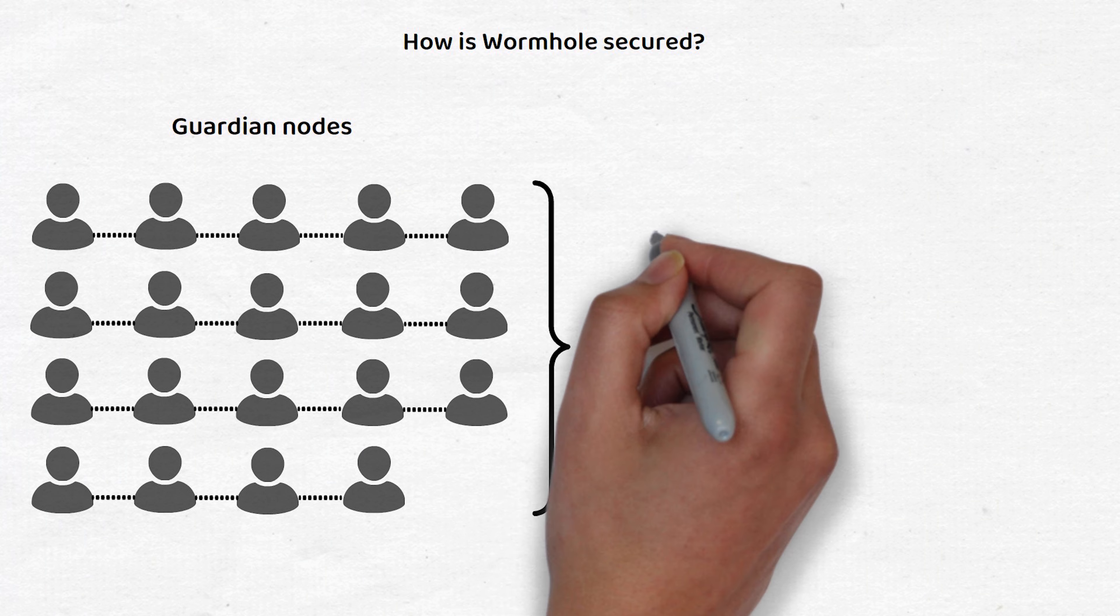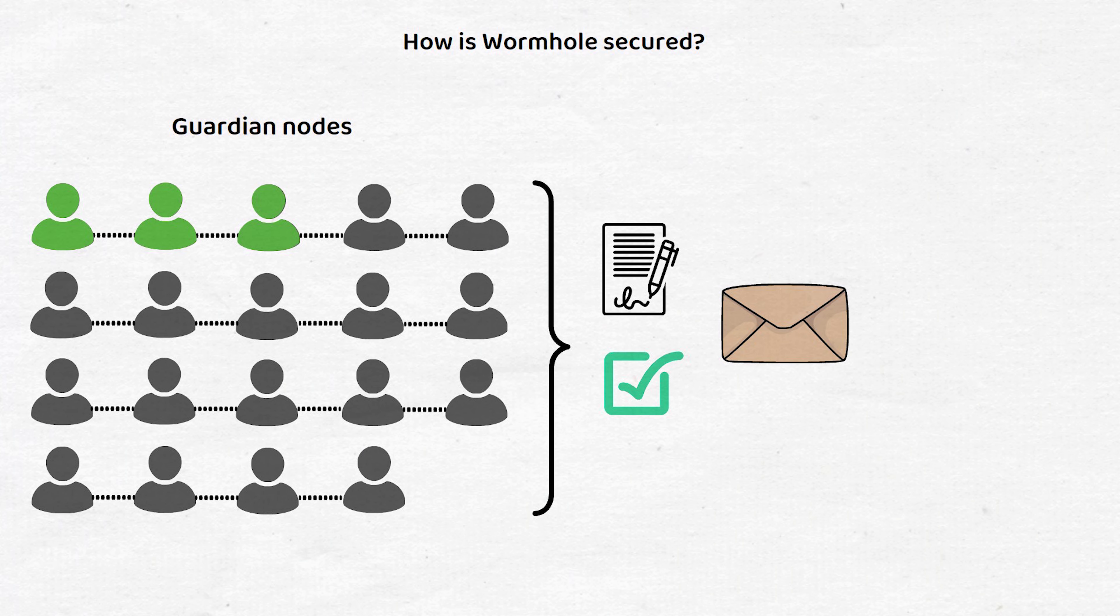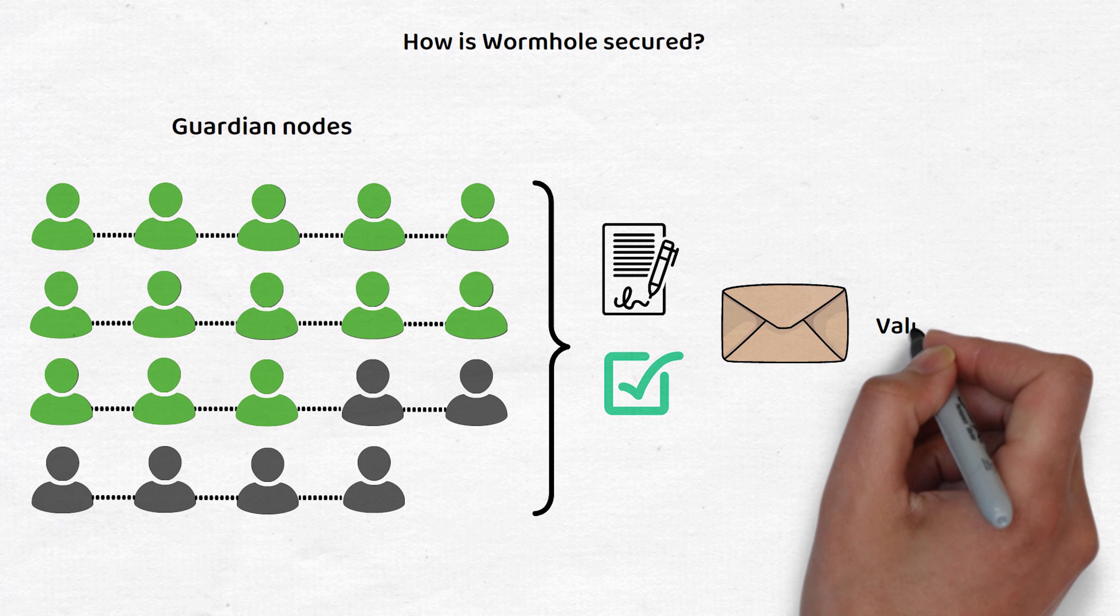These guardians are responsible for signing and validating messages passing through Wormhole, and if 13 out of the 19 guardians sign the same message, that message is deemed valid.